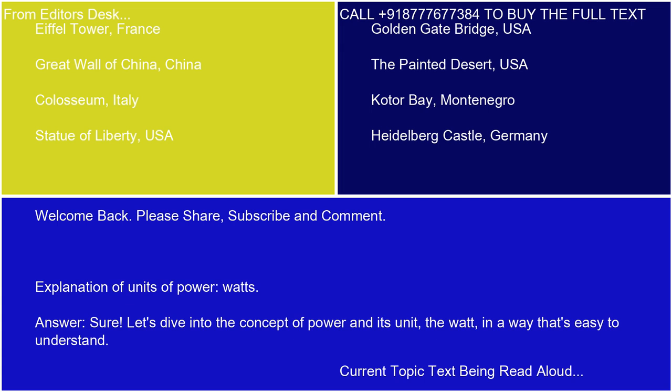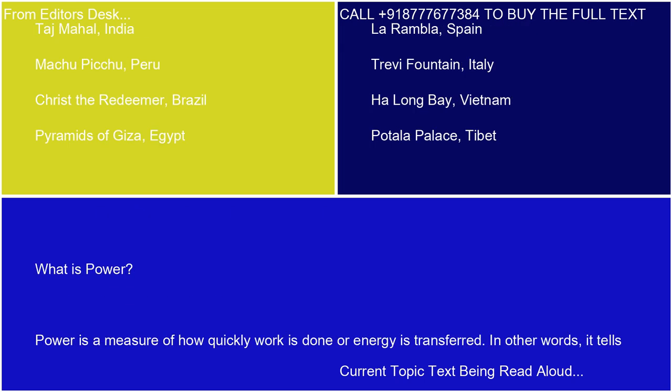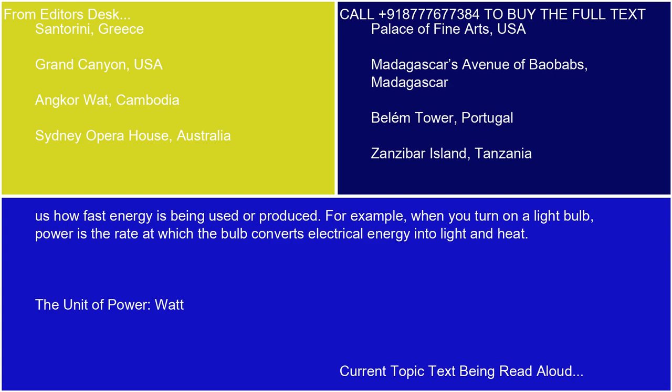Let's dive into the concept of power and its unit in a way that's easy to understand. What is power? Power is a measure of how quickly work is done or energy is transferred. In other words, it tells us how fast energy is being used or produced. For example, when you turn on a light bulb, power is the rate at which the bulb converts electrical energy into light and heat.